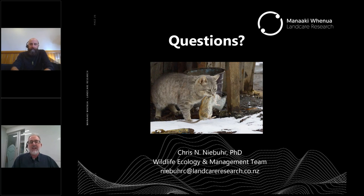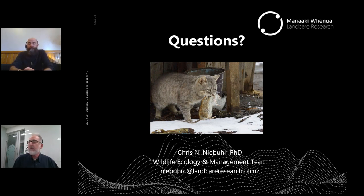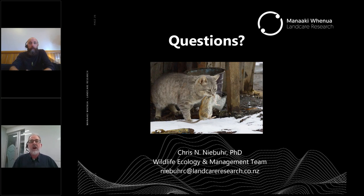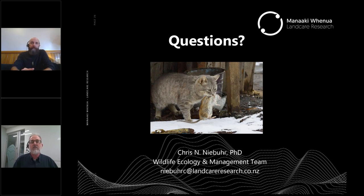Chris did a great job highlighting how this really is a very complicated system with a lot of unanswered questions. Do we have any figures for the rate of toxoplasmosis exposure to humans in New Zealand? The questioner noted the rate is about 20% in the US. I don't know the New Zealand figures — I believe it's very understudied here. Lots of people can be affected and it's sort of benign or latent in them. It doesn't seem to be an acute infection problem in New Zealand.